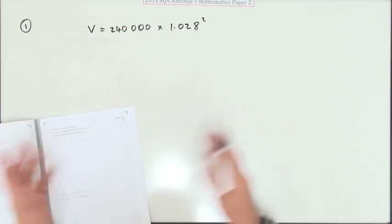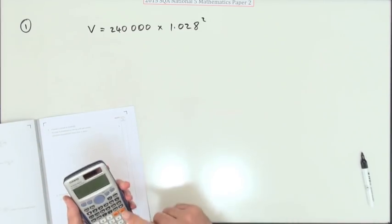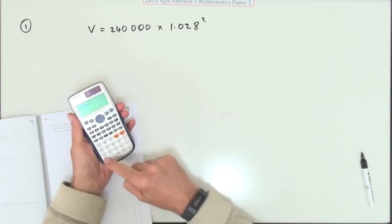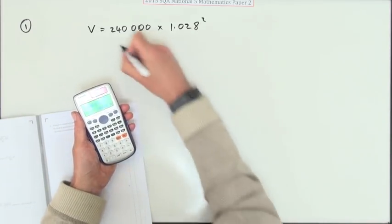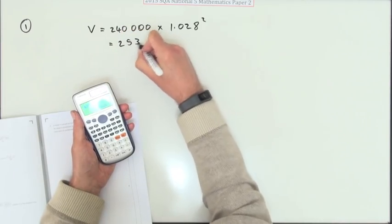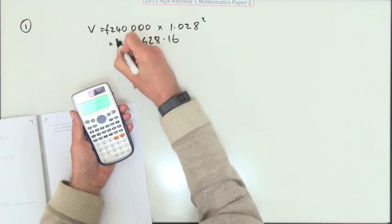And it doesn't even say what to do with your answer. So this is a case of just press the buttons and you get 253628.16, and that was in pounds.